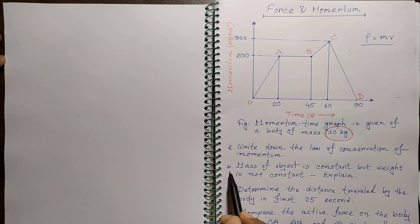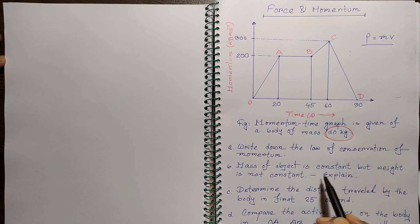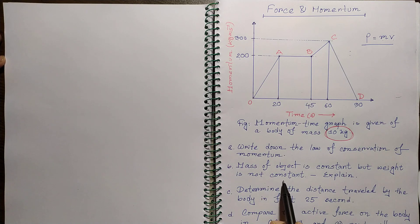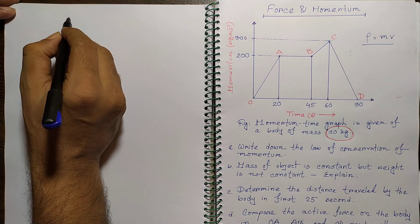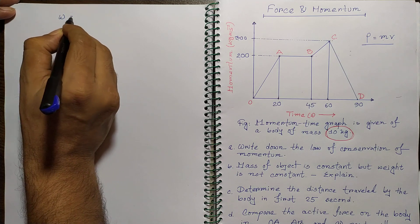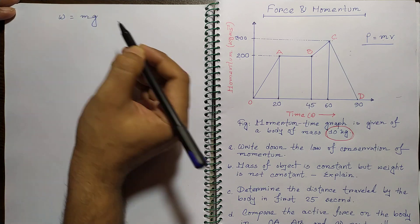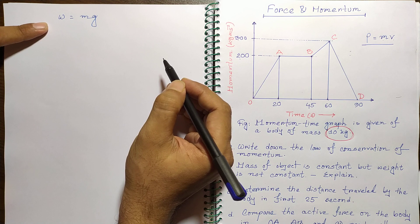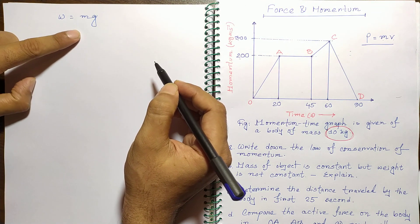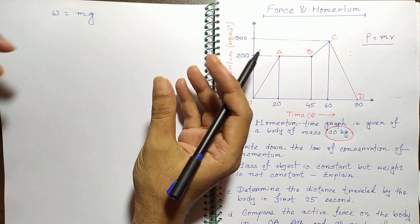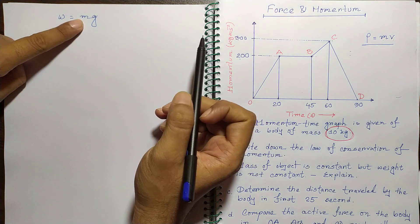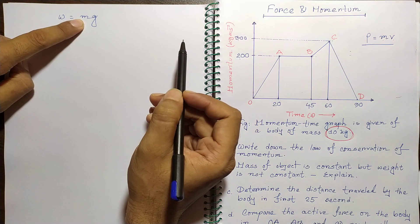In question B, mass of the object is constant but weight is not constant. Weight is w = mg — the product of mass and gravity. Mass is the amount of matter inside a body, whereas weight is the force of gravity.